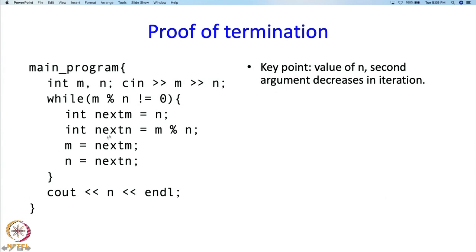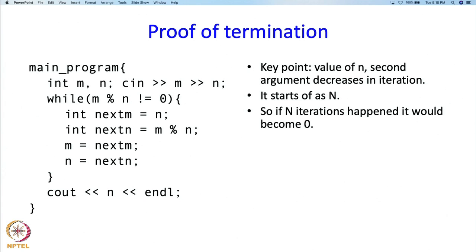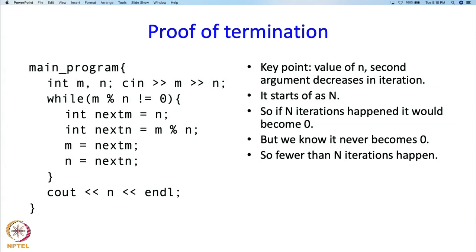We have only proved that the correct answer is printed if control ever gets to the print statement, so next we have to argue that control actually gets there — that is the proof of termination. The key point is that the value of n, the second argument, is always going to decrease. The next value of the second argument is m mod n, and m mod n is always smaller than n — the remainder when something is divided by n is always smaller than n. So the second argument value starts off as capital N, it decreases and since it is an integer it decreases by at least 1. So fewer than N iterations can happen, meaning some finite number of iterations happen and the algorithm terminates.